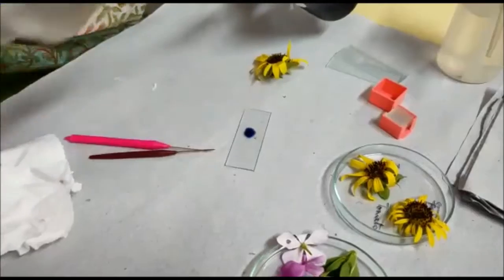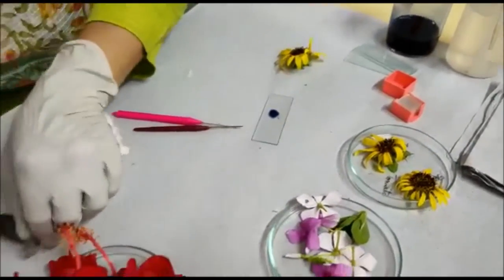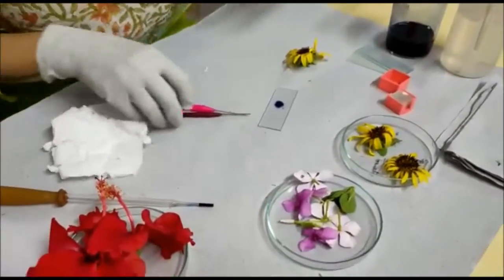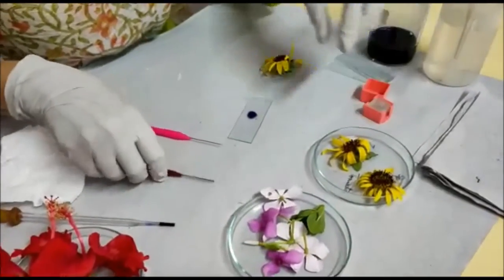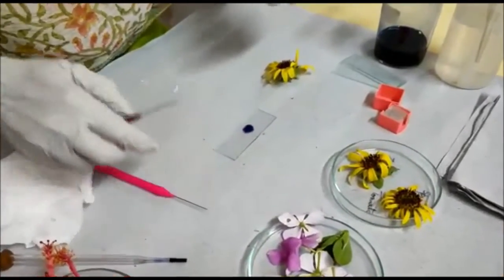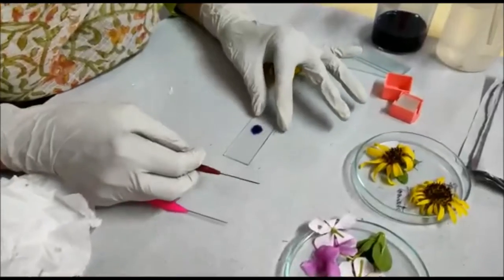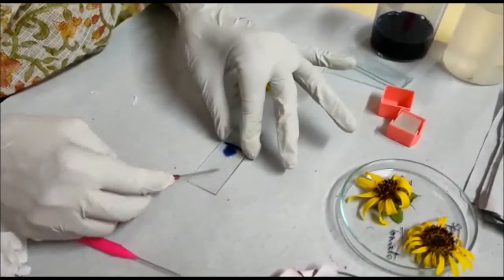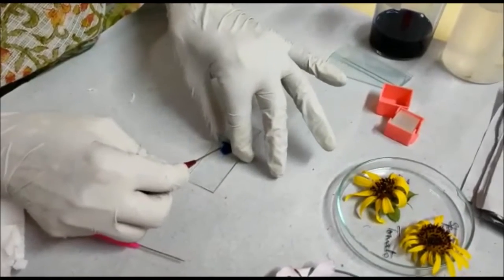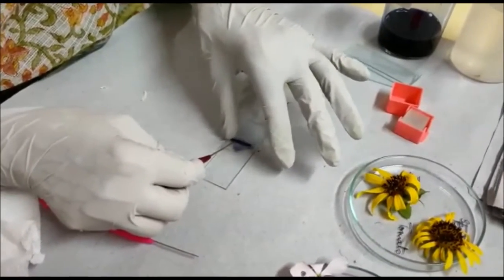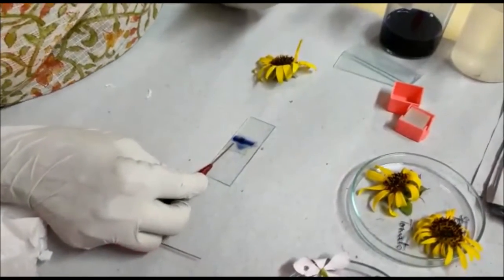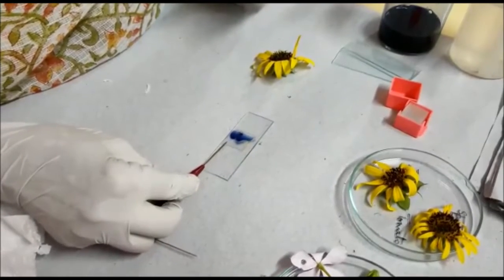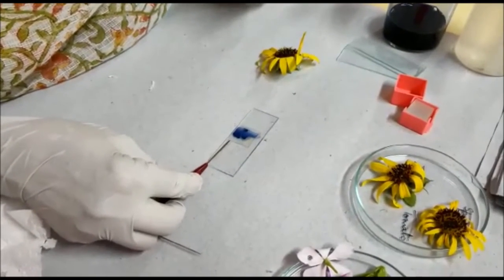Leave it for 5 minutes so the dye can enter the pollen grains, then take a cover slip. This is the correct way of putting the cover slip: place it at the edge of the droplet, let it spread uniformly, then place your needle here and slowly remove it like this.